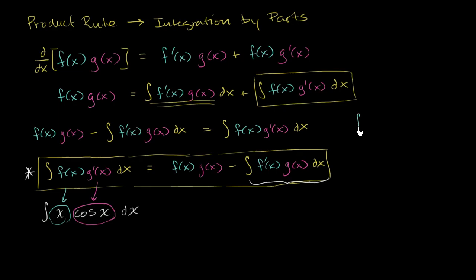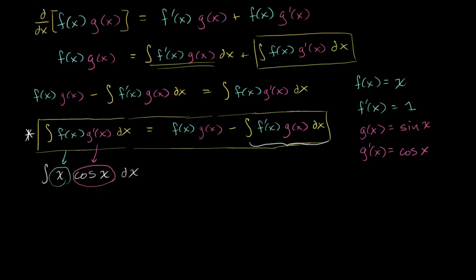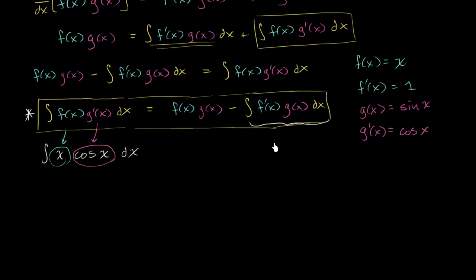We are assigning f of x to be equal to x, and that means that the derivative of f is going to be equal to 1. We are assigning g prime of x to be equal to cosine of x, which means g of x is equal to sine of x, the antiderivative of cosine of x. Now, let's see, given these assumptions, let's see if we can apply this formula.